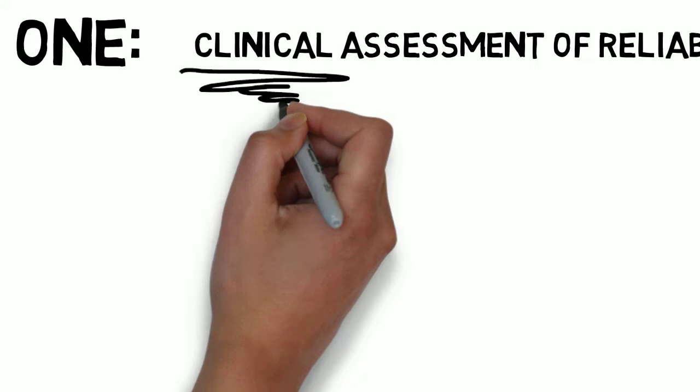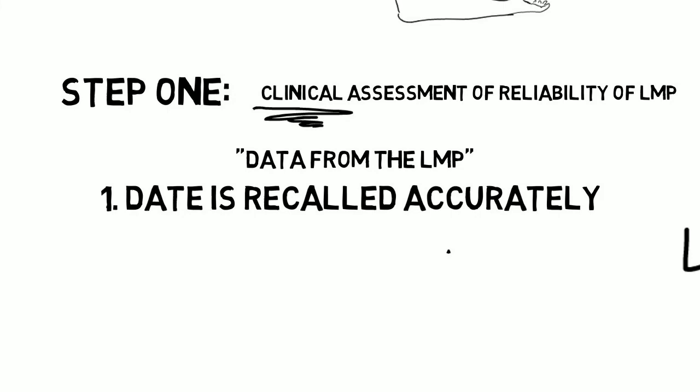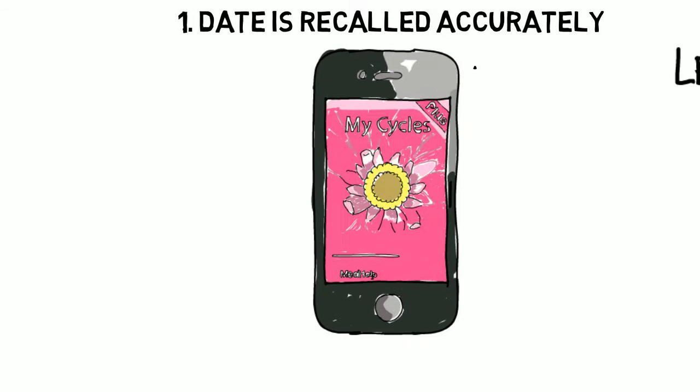Alright. Step 1. Clinical assessment of the reliability of the LMP date based on the data from the last menstrual period. The implication here is that 1. The date is recalled accurately, like written down on a calendar. And 2. The clinical history suggests that ovulation happened 14 days later.